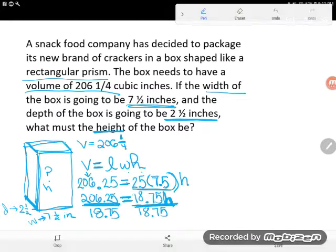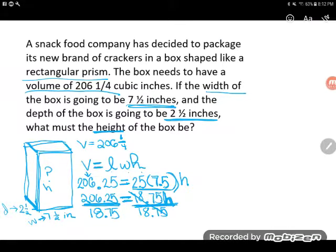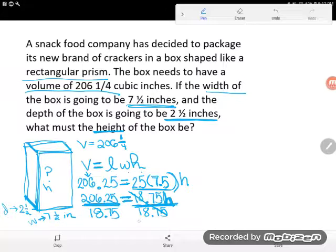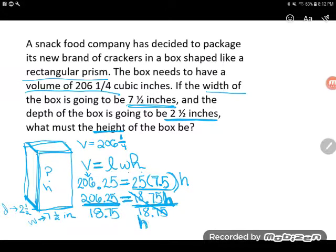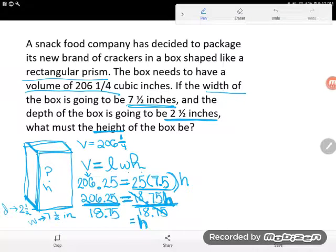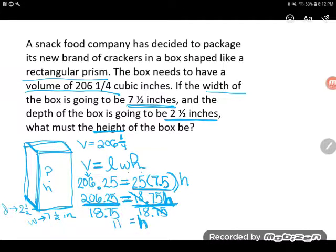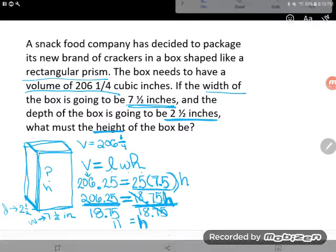Well, on this right-hand side, 18.75 multiplying and 18.75 dividing cancel, so all I have left is an h. And on this left-hand side, well, there's math to do. And again, I'm going to plug it in my calculator: 206.25 divided by 18.75 gives me 11.